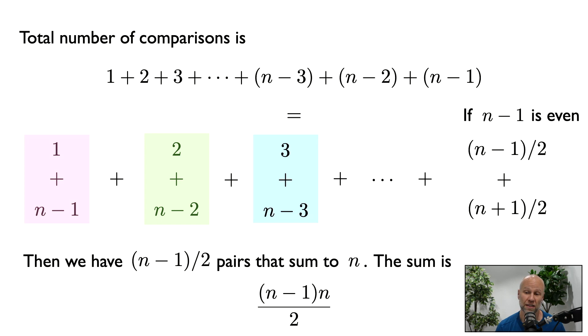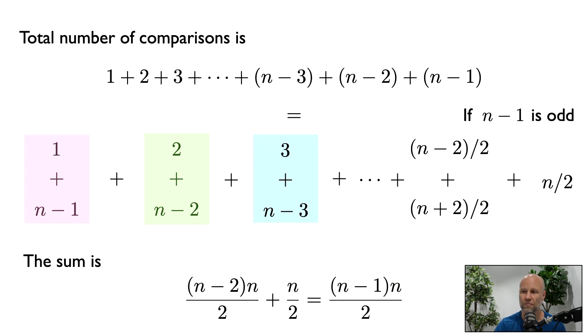And this is going to depend on if n minus 1 is even or odd. So if n minus 1 is even, then n minus 1 divided by 2 is an integer, and n plus 1 divided by 2 is also an integer. And then this is going to be the middle pair. And you see that again, these numbers sum up to n. So in this case, we have n minus 1 quantity divided by 2 many pairs, all of which sum to n. So the sum is n minus 1 times n divided by 2.